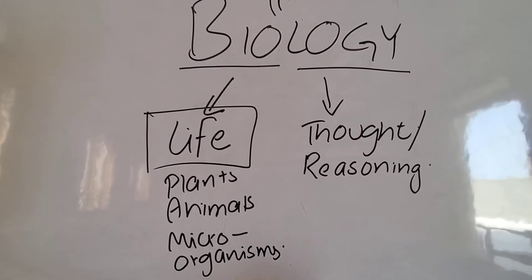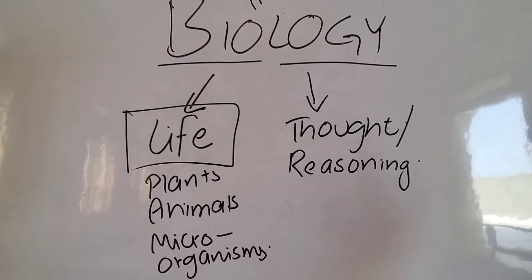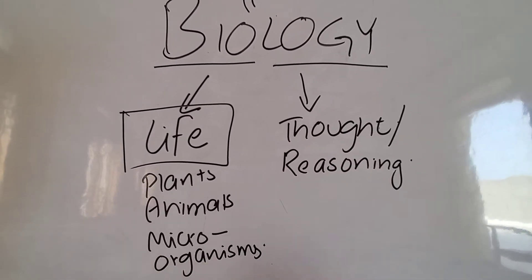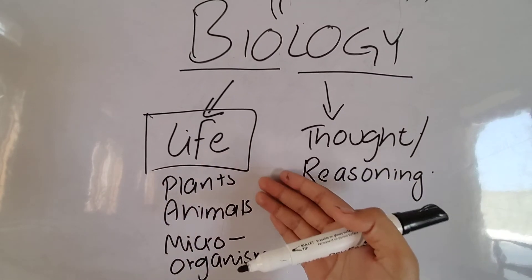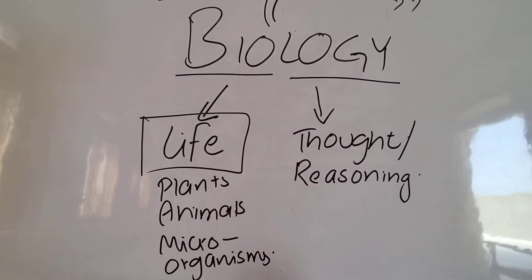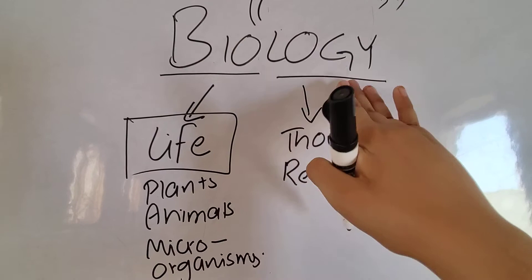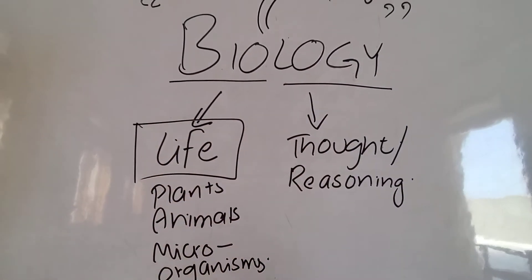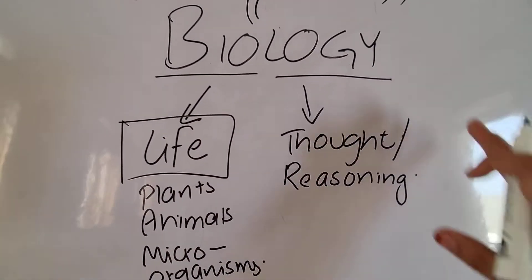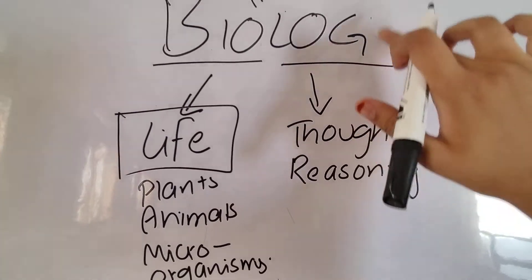We are not going to be discussing about the table, the chair, the wood, the metal, but we are going to be discussing about the plants, the animals, or the microorganisms. Now what is the second term about? It is about logi, logi means thought or reasoning.